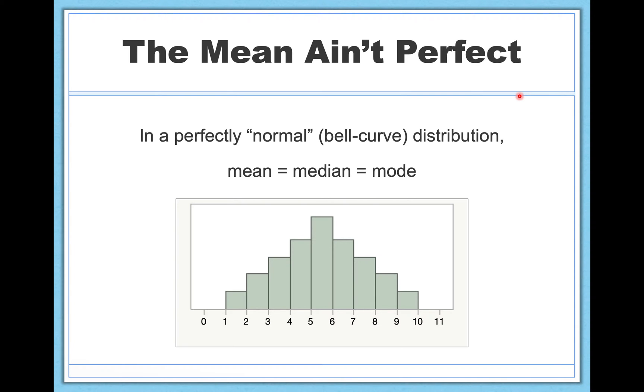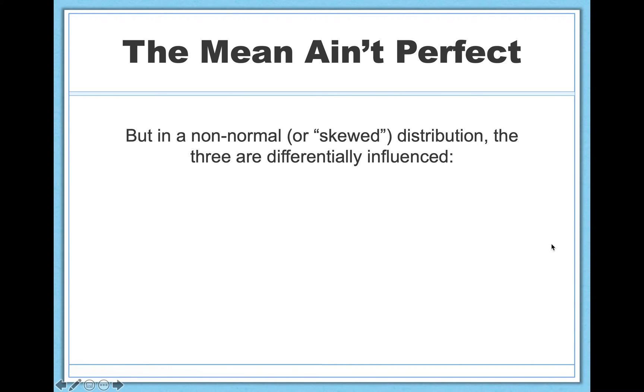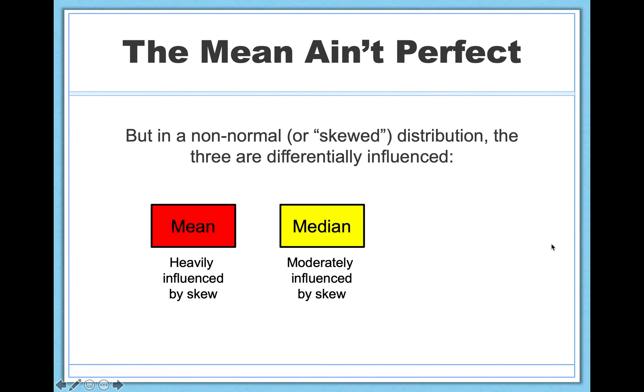And going along with this idea of the mean having this limitation, you know, we can't calculate the mean of beverages. It just doesn't make sense. There's also one other major limitation of the mean that some people tend to forget. So in a perfectly normal distribution called a bell curve distribution, because if we were to draw kind of a line describing this distribution, it would kind of look like a bell more or less. In a perfectly normal bell curve distribution, the mean, median, and mode are all equal to one another. They're all right here at five. But what happens when you have a skewed distribution? In that case, the three measures of central tendency will be differentially influenced. The mean is heavily influenced by skew. The median is moderately influenced by skew. And the mode is relatively immune to skew. So that's another point in favor of the mode. And let me illustrate.